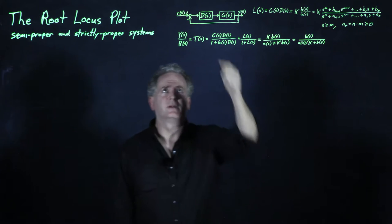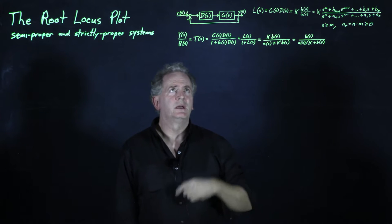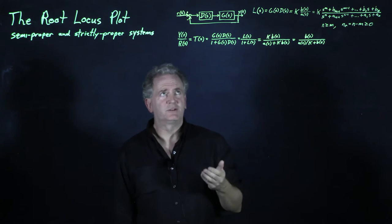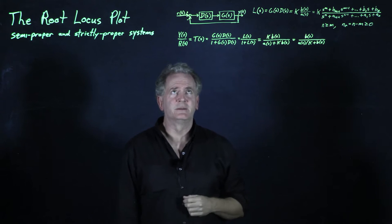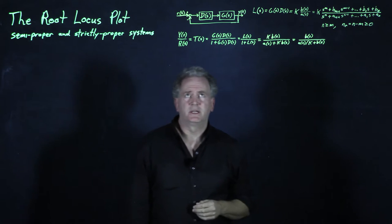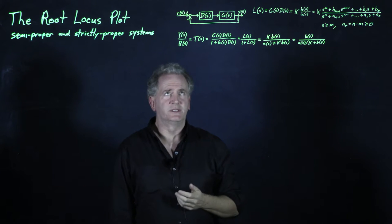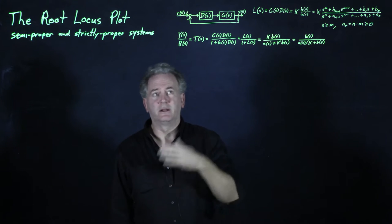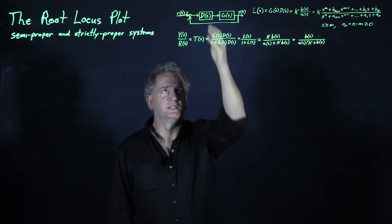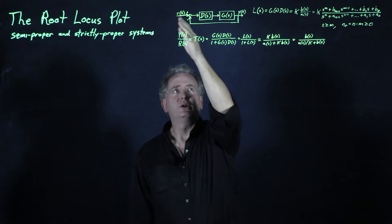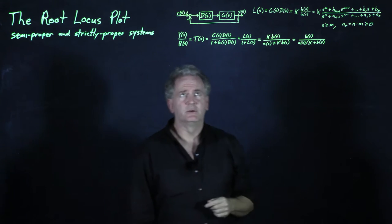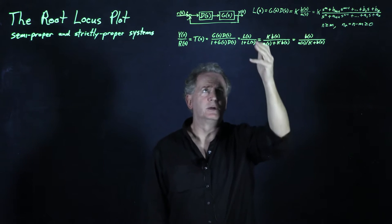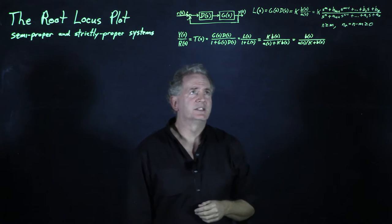I'm going to start with my standard feedback configuration, where I have a reference input R(t), a measured output Y(t), a linear system — typically a physical plant governed by a linear constant coefficient ordinary differential equation — which we can Laplace transform and write in transfer function form, denoted G(s), and a controller, typically a linear circuit constructed with resistors, capacitors, and operational amplifiers, also in transfer function form denoted D(s). Our input-output relationship from R(s) to Y(s), denoted T(s), is G(s)D(s) over 1 plus G(s)D(s). Denoting G(s)D(s) as L(s), we can write this as L(s) over 1 plus L(s).